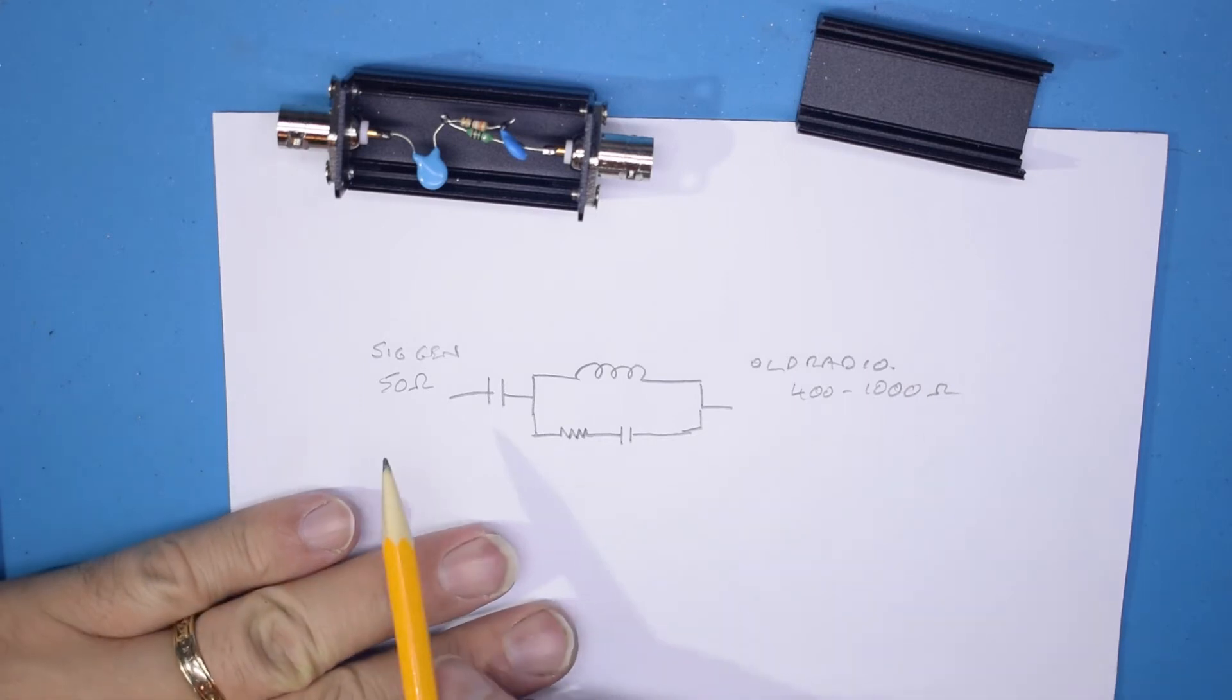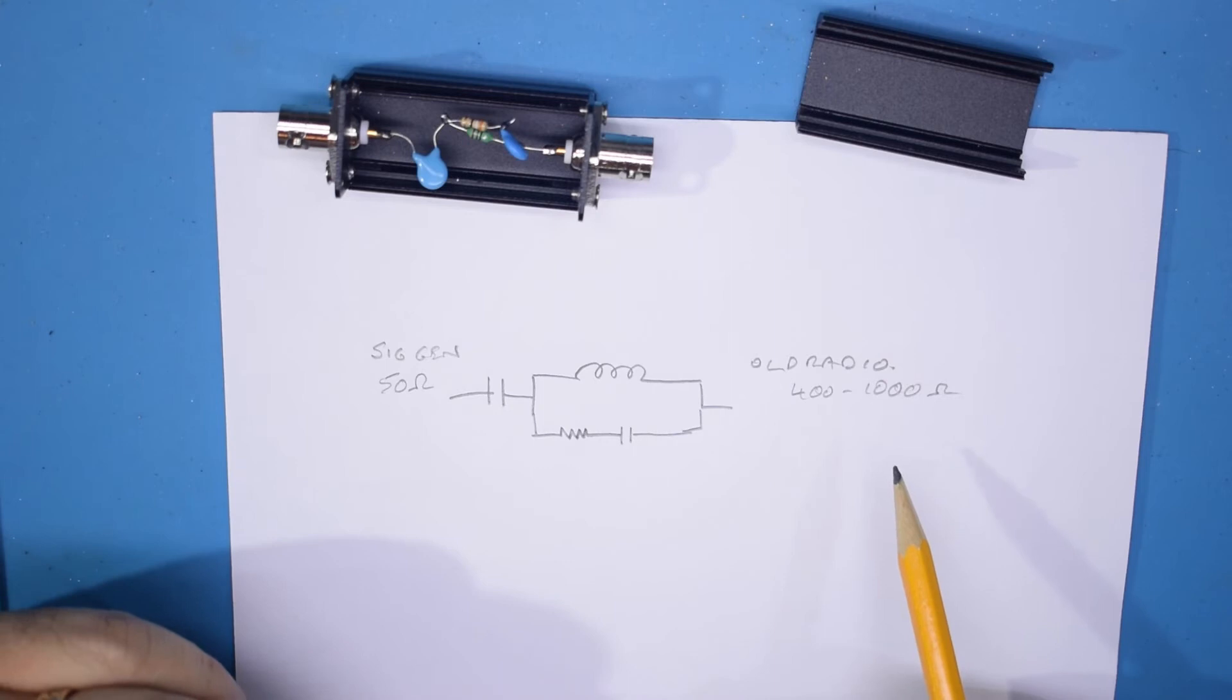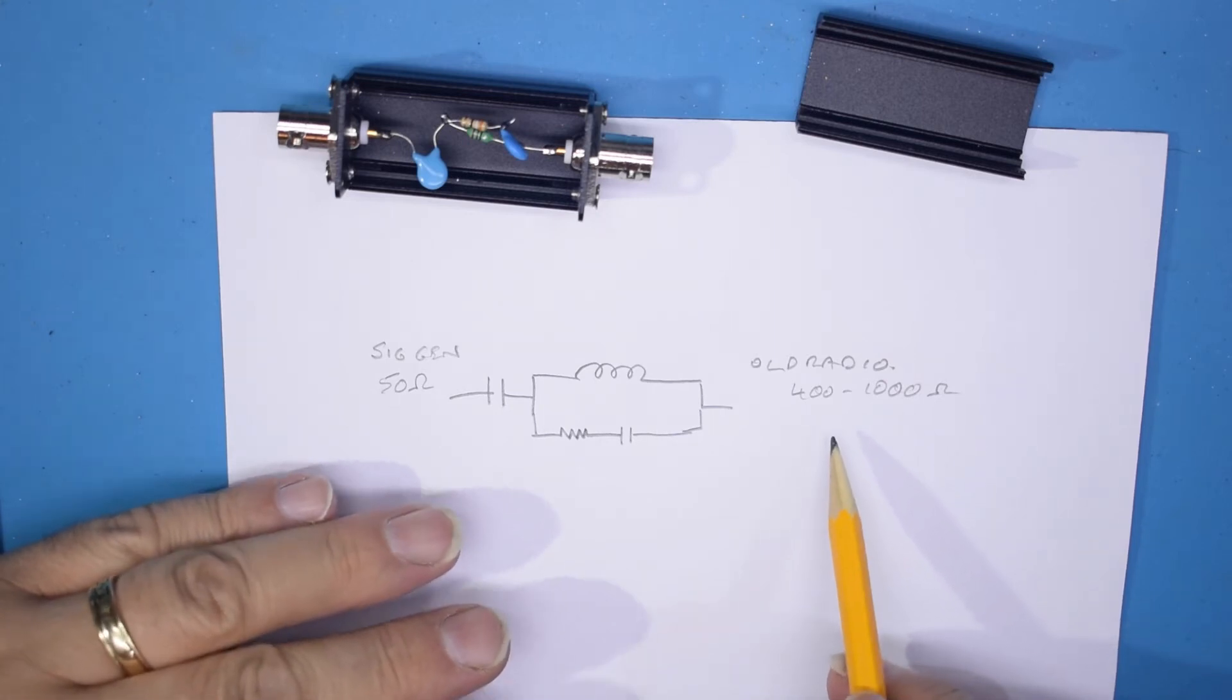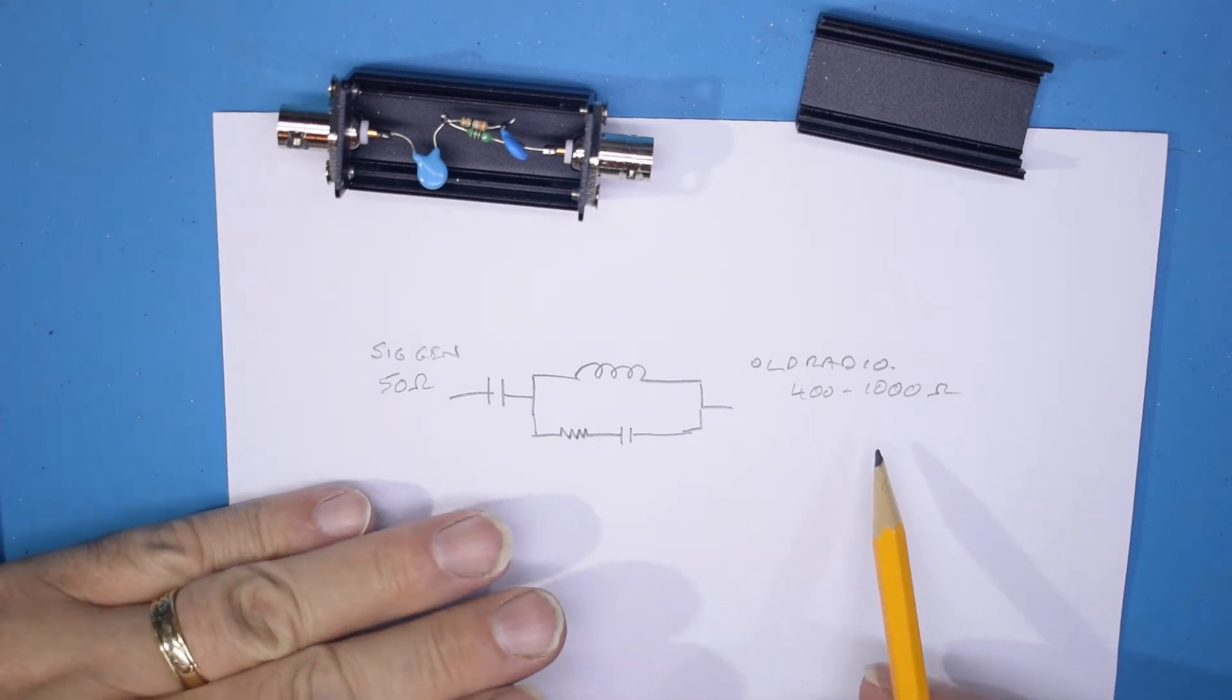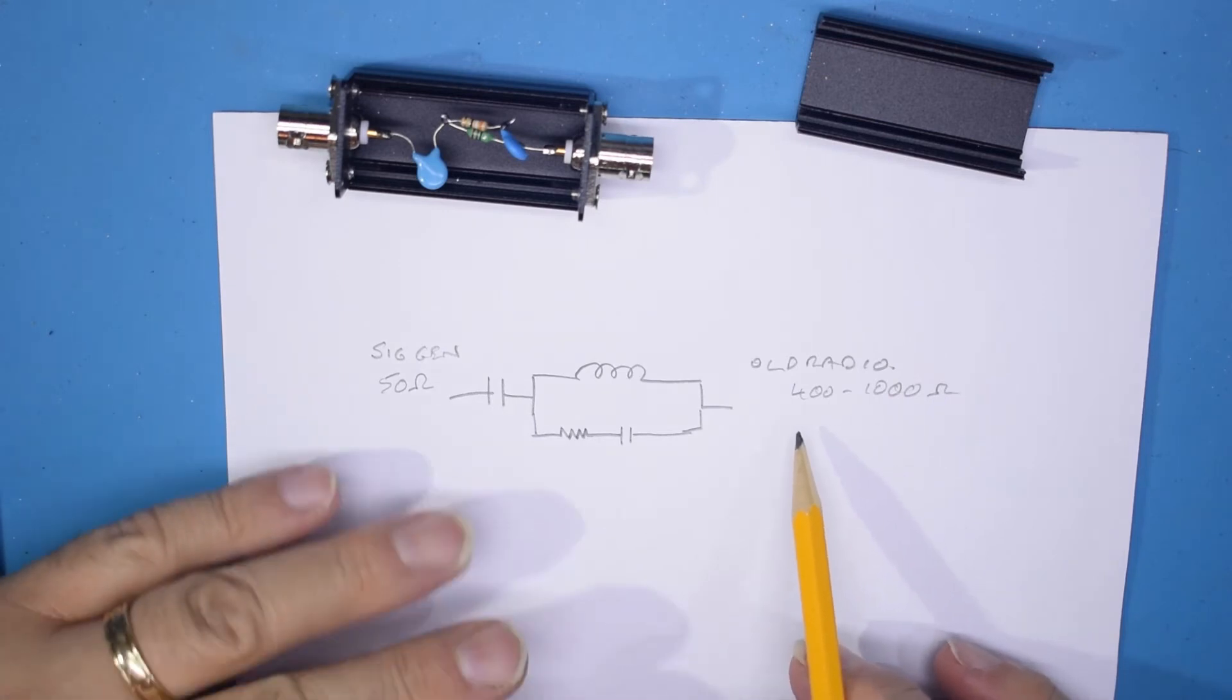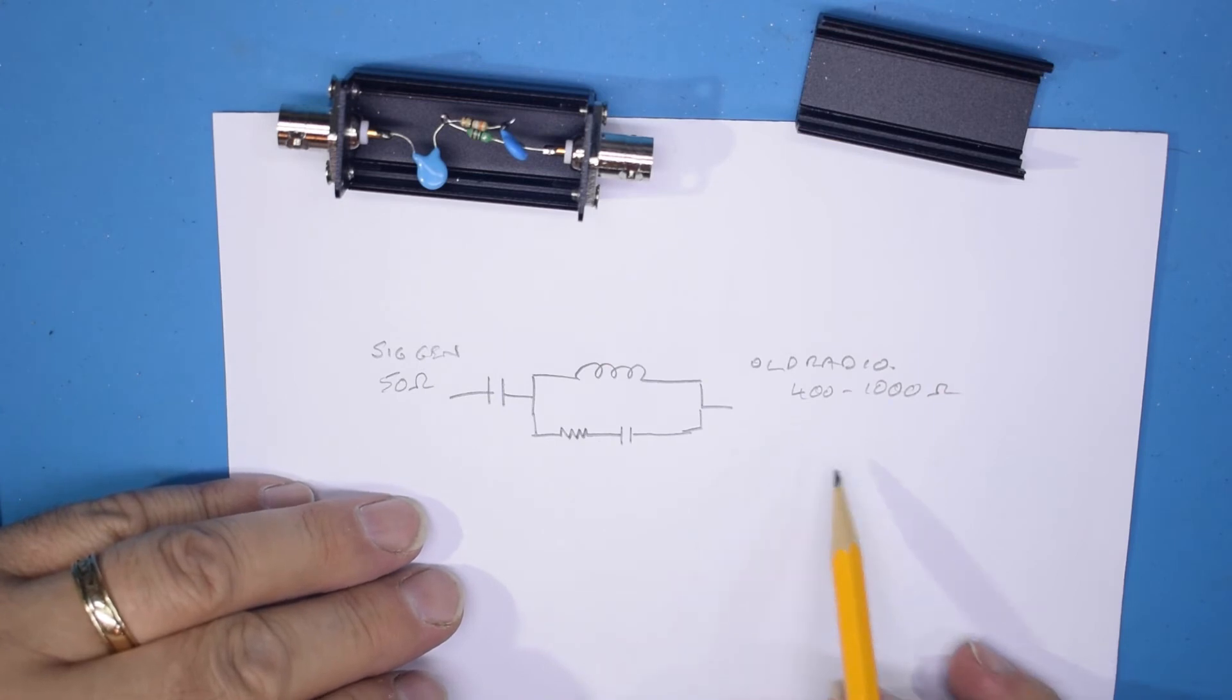If you put 50 ohms straight into the old radio, when you actually put any rough antenna on the end of it, you'll find that it will actually detune the radio. It's looking for a typical antenna, which is this sort of level, not this precise 50 ohm low impedance load.